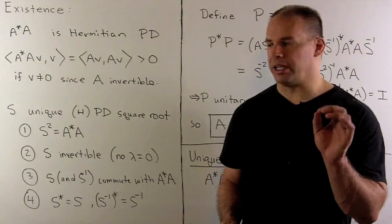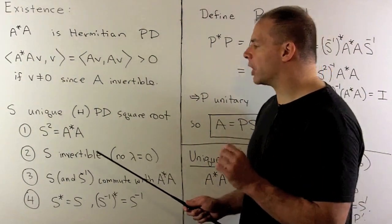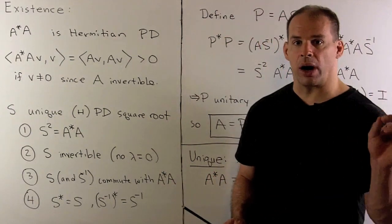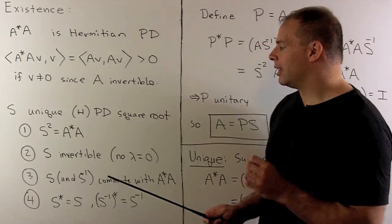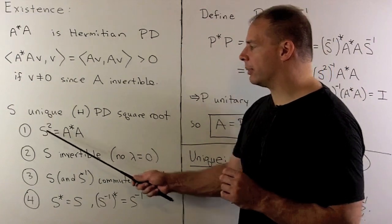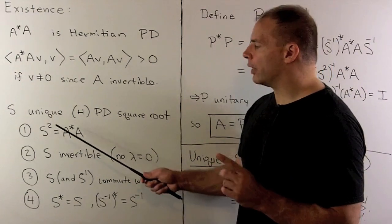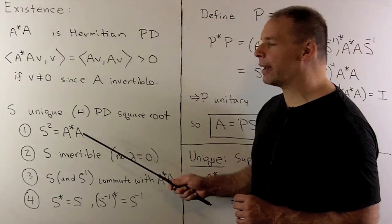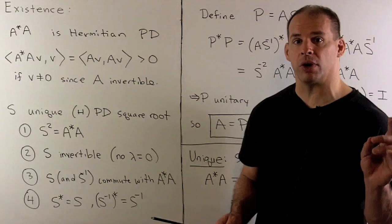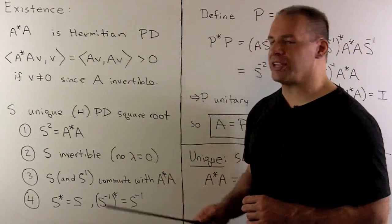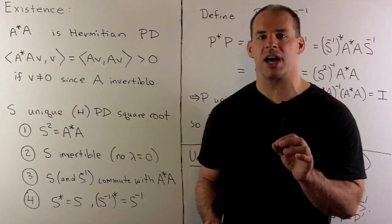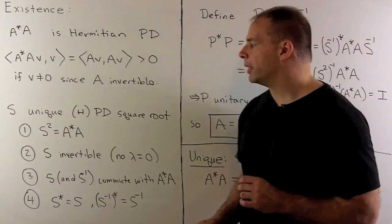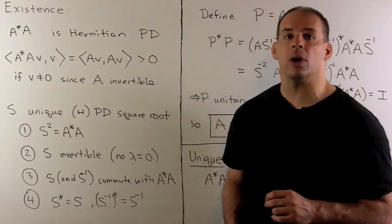Let's list some properties of S that we'll need. First, S squared equals A-star A — that's just the definition of being the square root. Then S is invertible: taking the determinant of both sides, the determinant of A is non-zero because A is invertible, and the determinant of A-star is just the complex conjugate of the determinant of A, so it's also non-zero. Therefore the determinant of S is non-zero, so S is invertible.